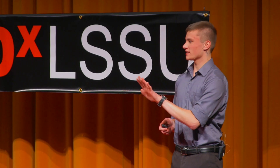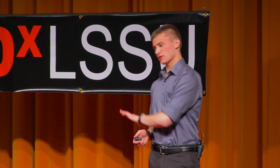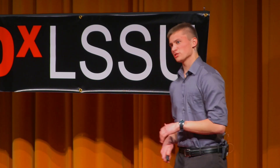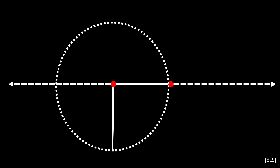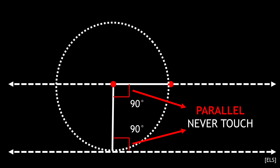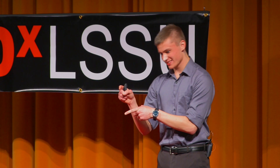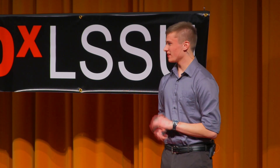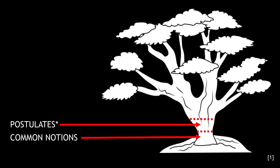Euclid also identified five postulates, or five basic assumptions. Given any two points: one, you could connect a line segment between them; two, you could extend that line segment infinitely in either direction; three, given that line segment and a point, you could make a circle; four, all right angles are congruent, or the same; and five, two lines cut by another line such that the two angles in between add to 180 degrees are going to be parallel and they'll never touch each other. Those five postulates and assumptions also go at the base of our geometry.